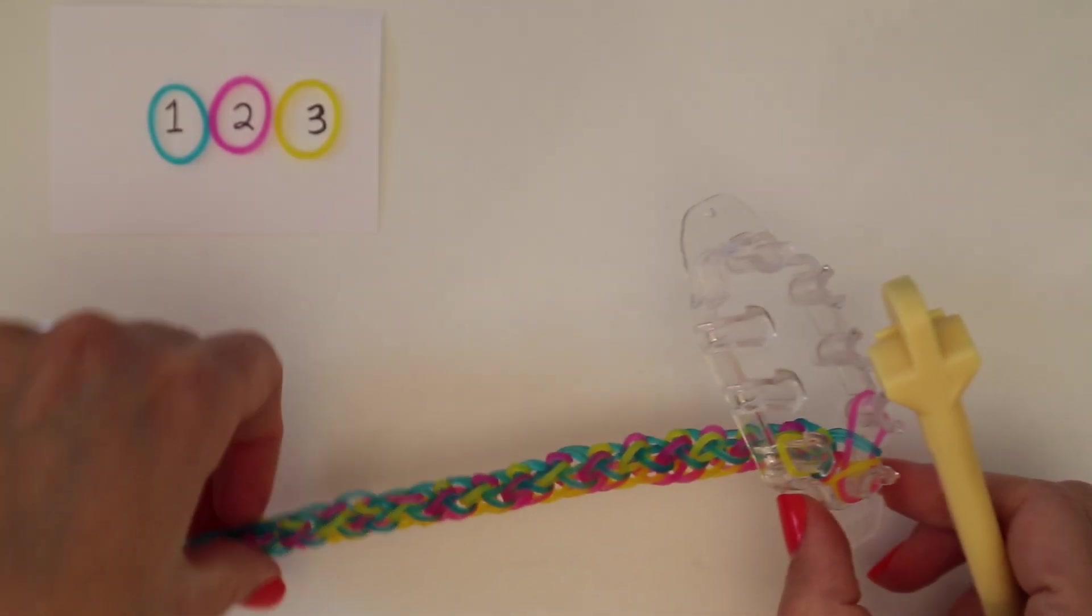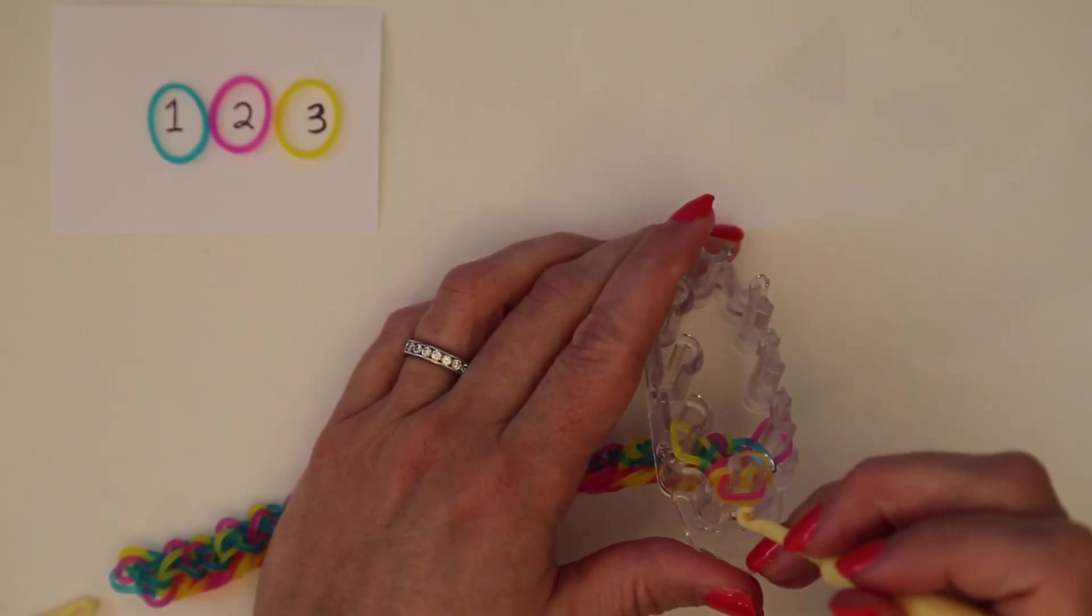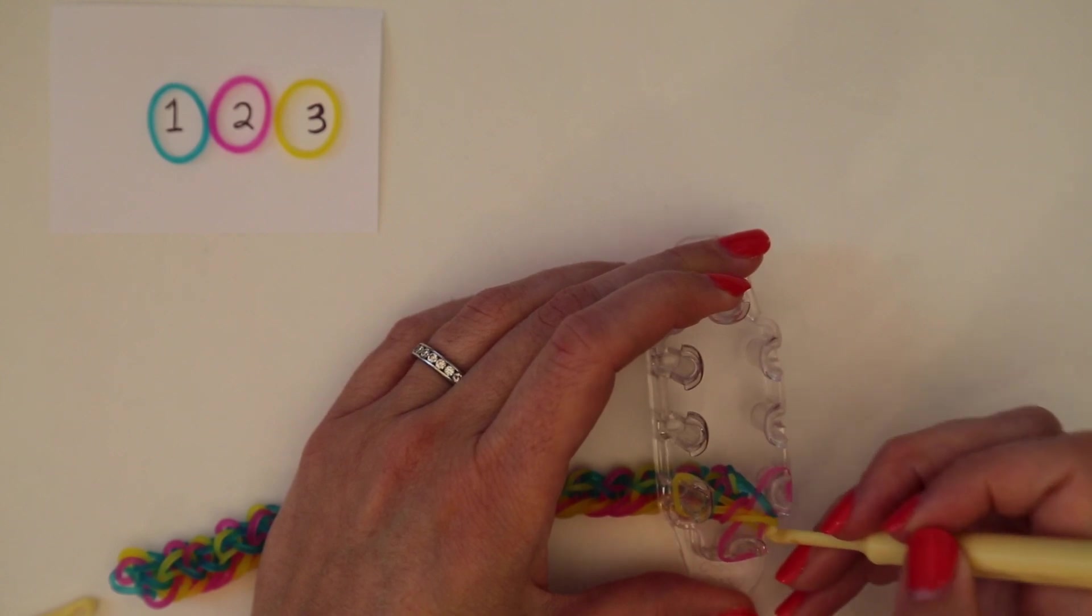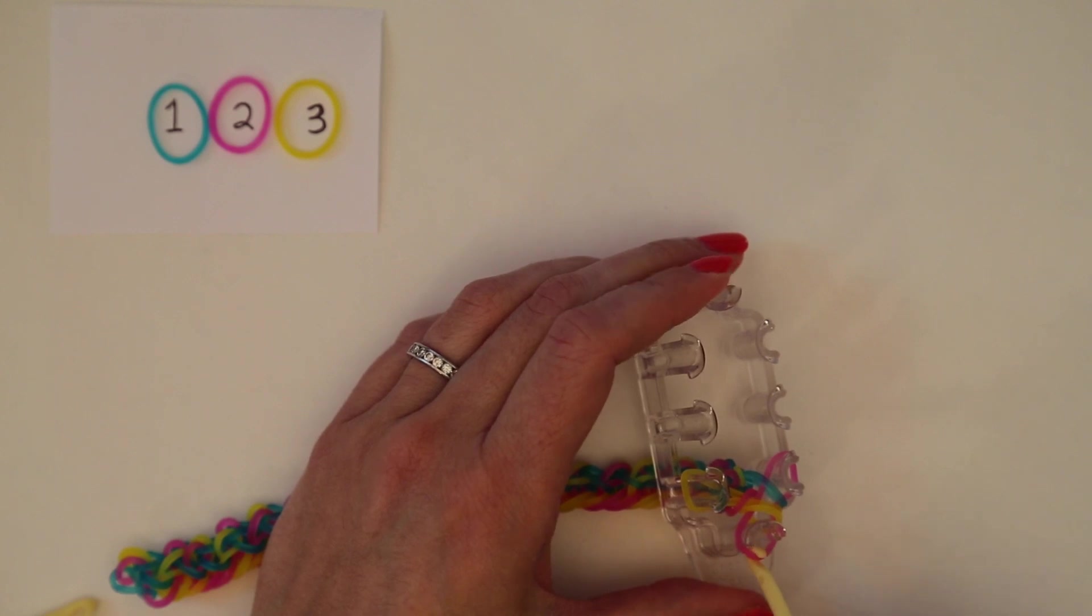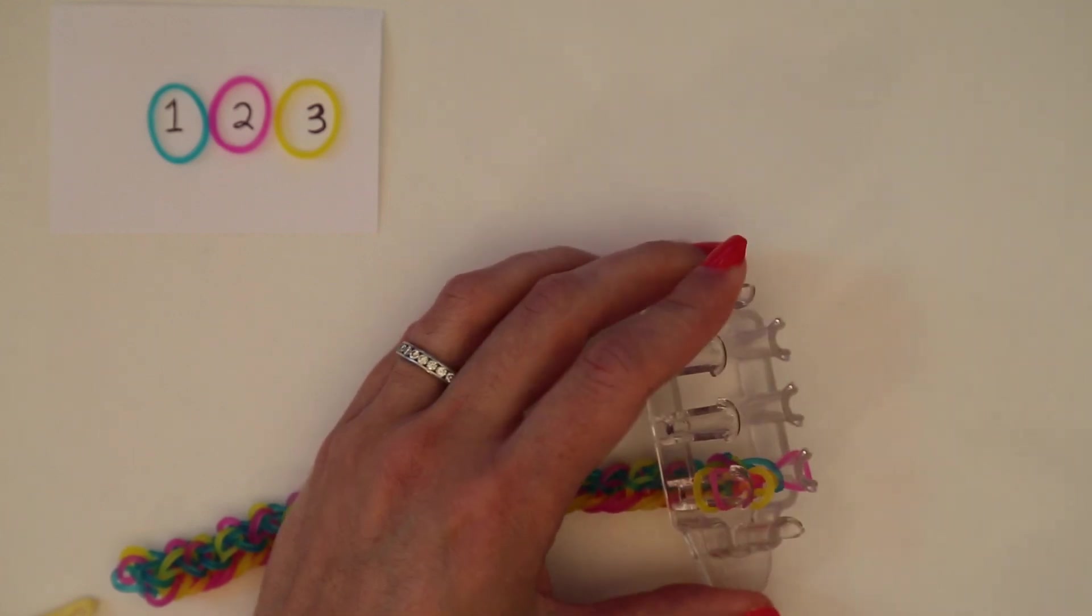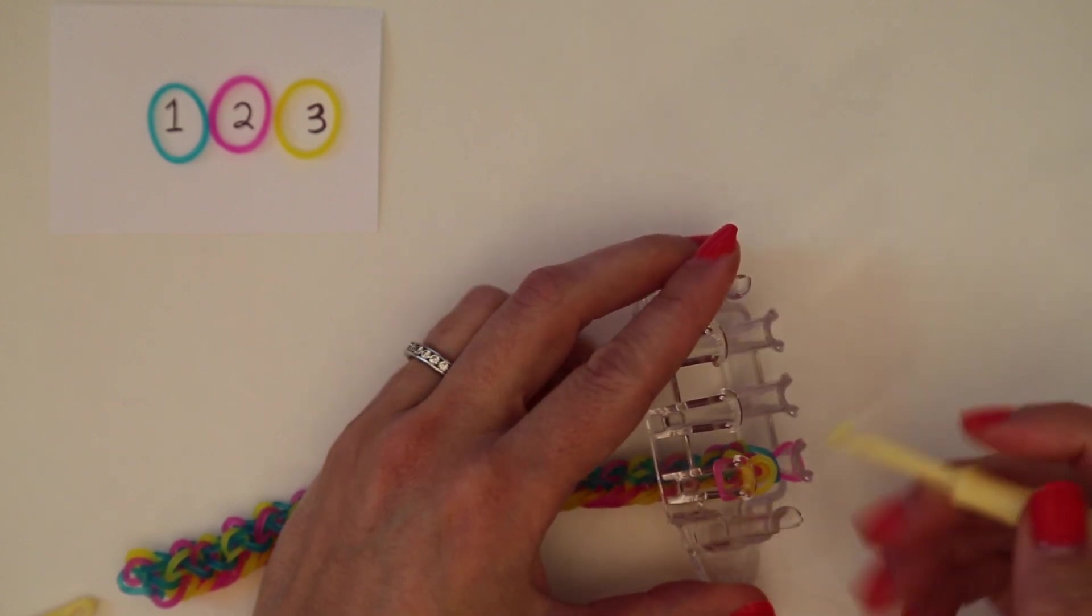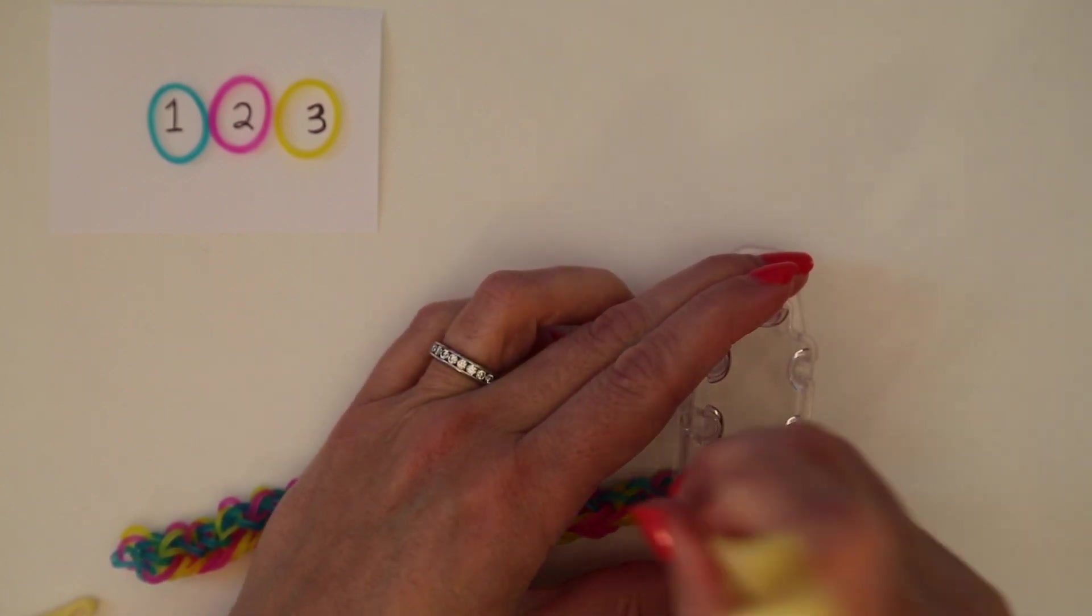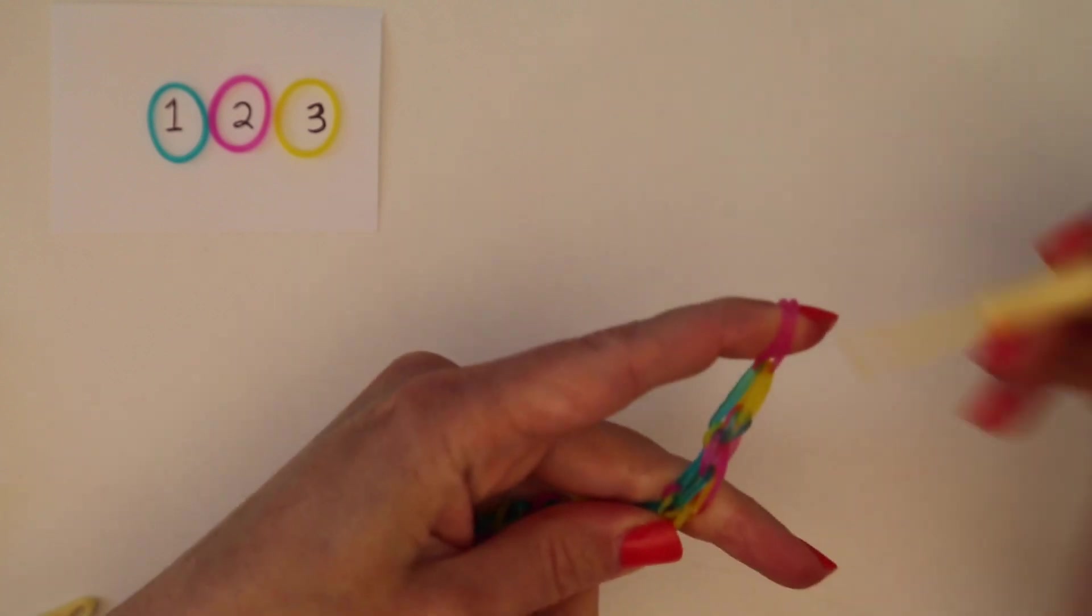And once you're happy with the length of your bracelet we're going to finish it off bringing the bottom rubber band on the front peg up and over, then the other rubber band on the front peg up and to the side, and then bring the band underneath up and over. And then you have just a single band remaining that you can take onto your hook and add a c-clip onto that one rubber band.